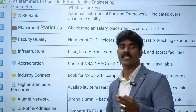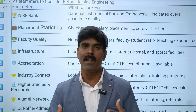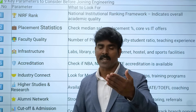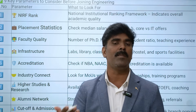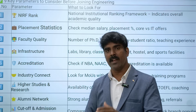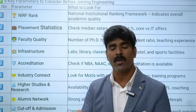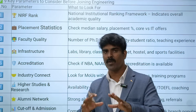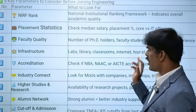The third important parameter is infrastructure - not just buildings. Look for centers of excellence and lab facilities such as robotics, 3D printing, Artificial Intelligence technology, and VLSI. There should be lots of lab facilities and software. Infrastructure includes labs, library, classrooms, internet, and hostel.